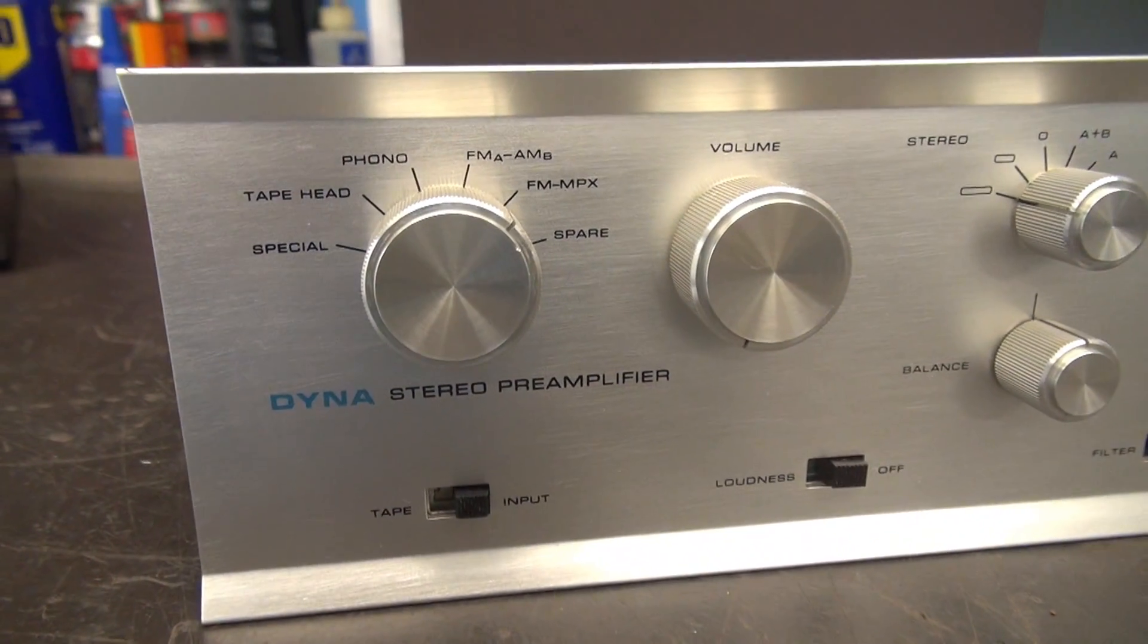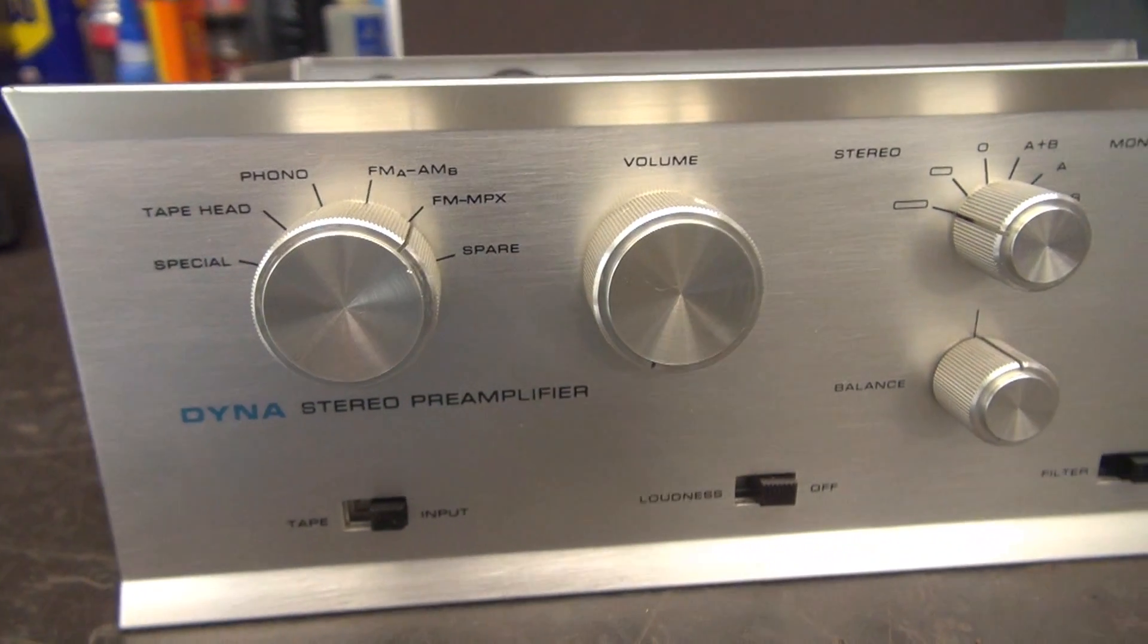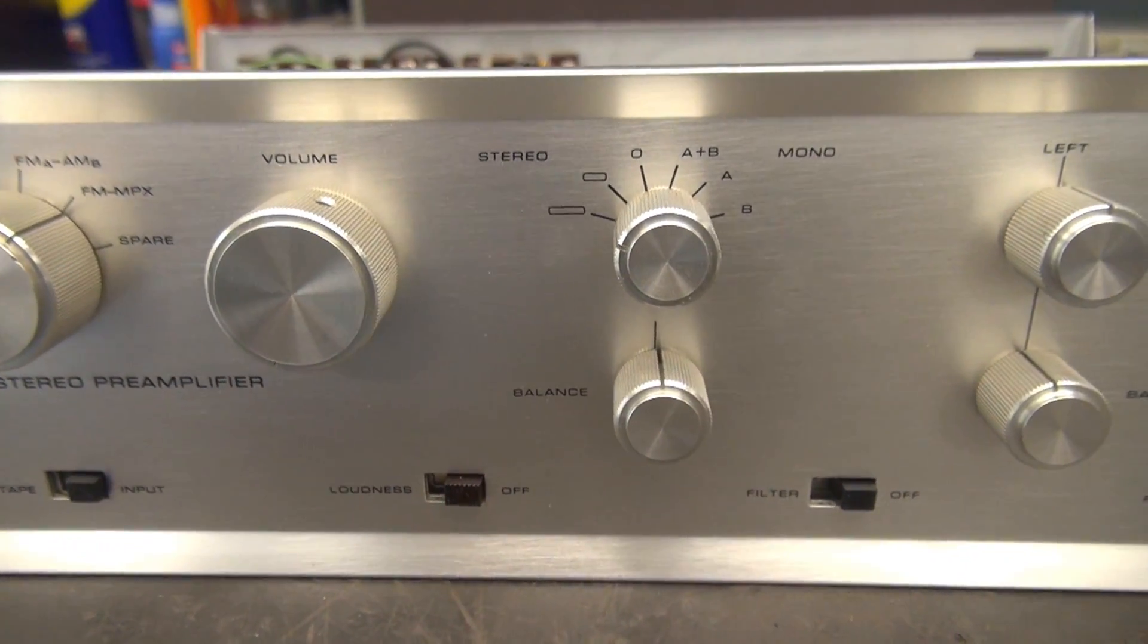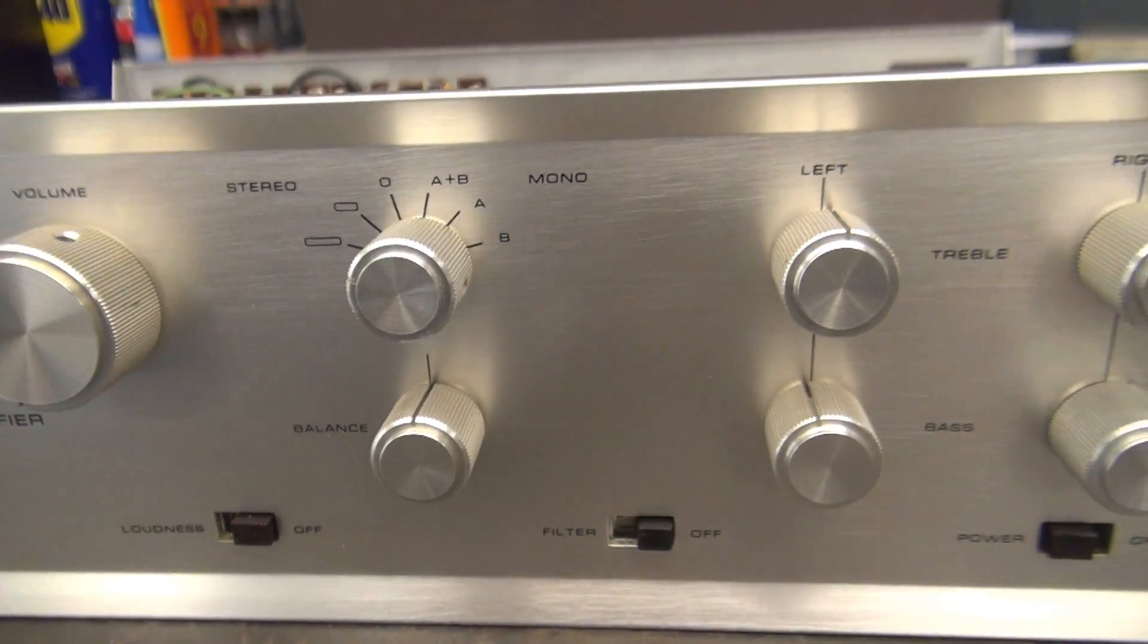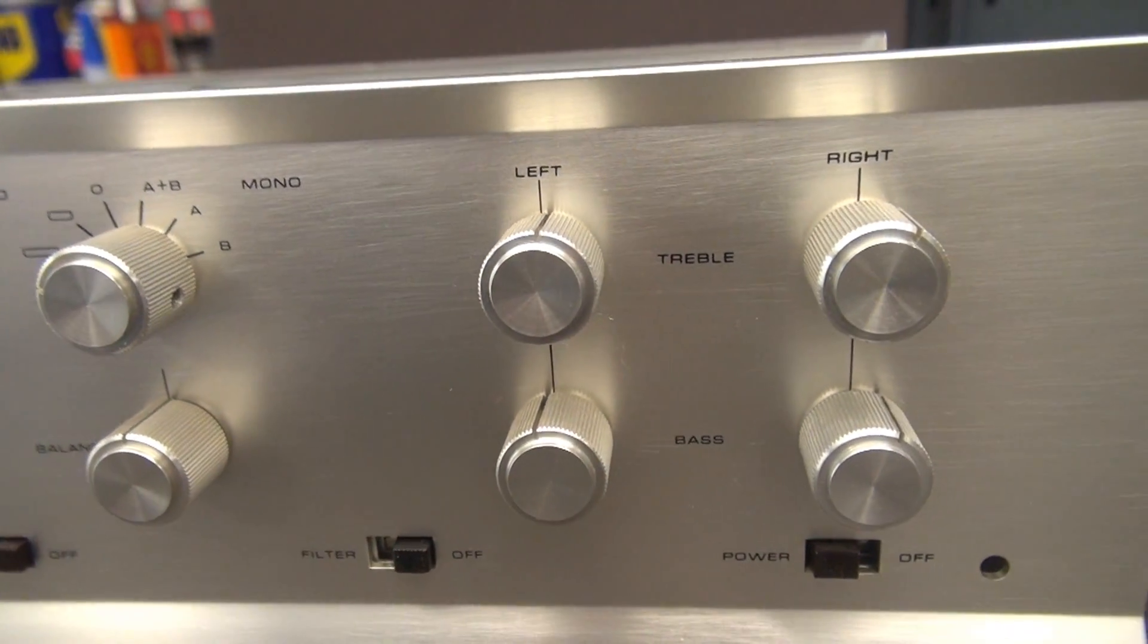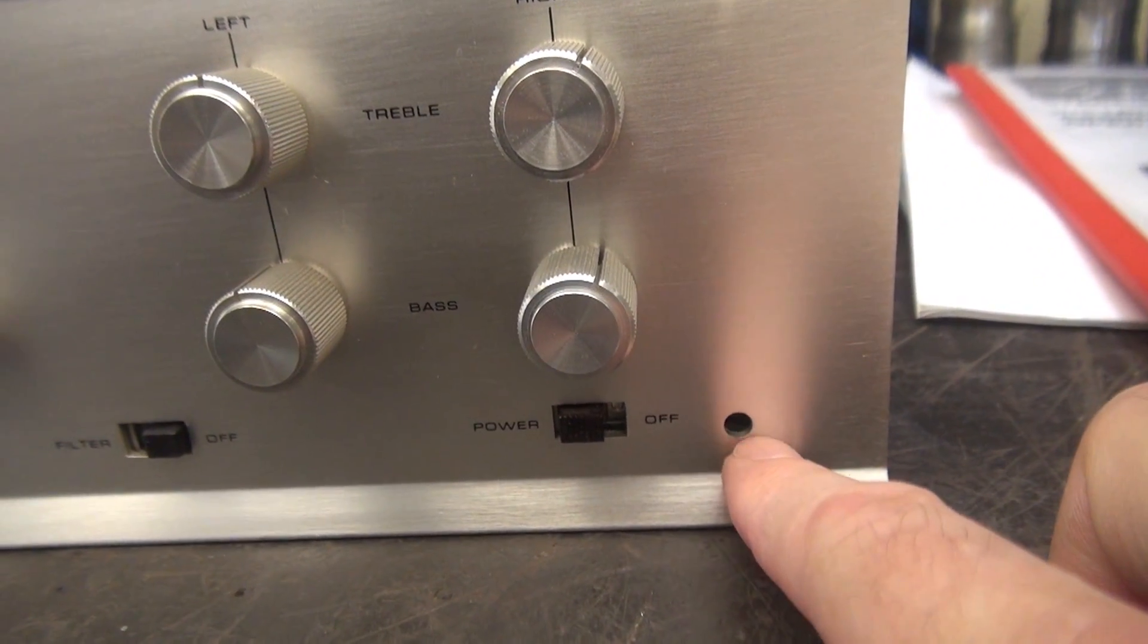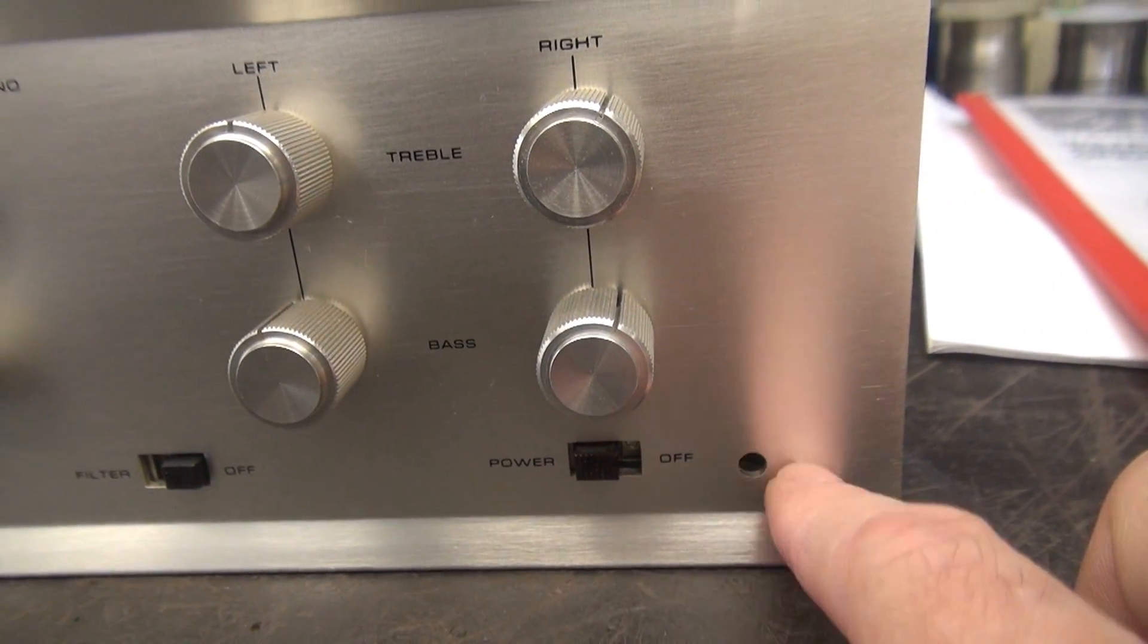Let's give the old Dynaco PAS a good look over. You can see the front panel is pretty much perfect. I don't see any wear of the lettering. Knobs are all original. The only thing I did spot is that the little jewel here for the power light is missing.